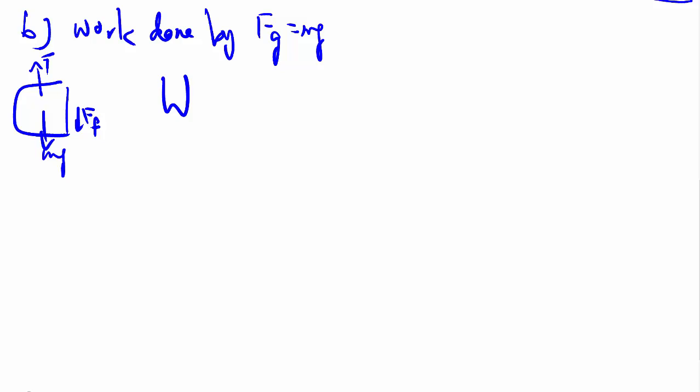Part B, they want the work done by gravity, or specifically Fg, which is my mg. If I quickly sketch the free body diagram again, here's my T, here's my mg, and there's my Ff. The work done is equal to Fg, specifically the parallel of Fg, times delta D.